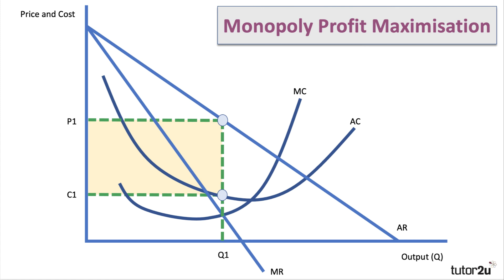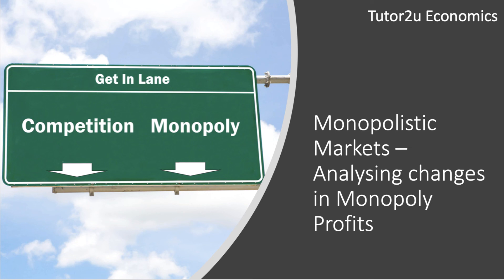Usually the monopolist would be operating on the elastic part of the average revenue demand curve, where marginal revenue is positive. Producing output to the right of where marginal revenue is zero would imply a fall in total revenue and lower operating margins, so a monopolist will always be operating to the left of where marginal revenue is zero. There's the monopoly profit — the price charged is well above the average cost of output. In the next video we'll develop these diagrams to get higher analysis marks and think about how monopoly profits might change.